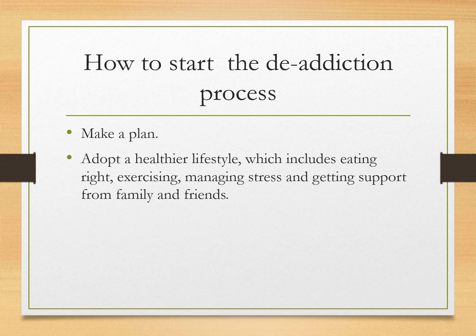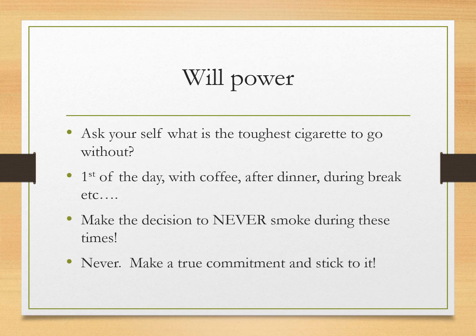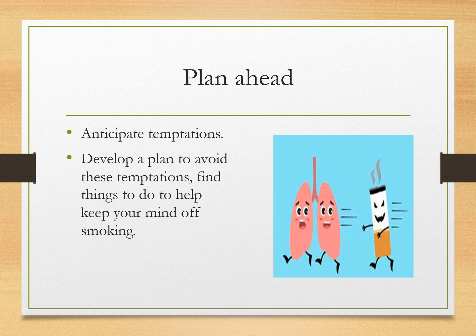When starting the de-addiction process, we make a plan: lifestyle changes like exercise, managing stress with yoga and other techniques, and support from friends and family. Willpower is very important — patients are asked about the toughest times they can't quit and what times of day they typically use tobacco, such as after coffee or with dinner. We counsel them to make a firm decision never to take tobacco, make a commitment, and stick to it. We anticipate temptations, plan how to avoid them, and suggest distractions — for example, taking a walk after lunch if they feel a craving.